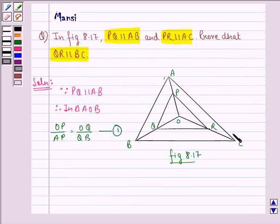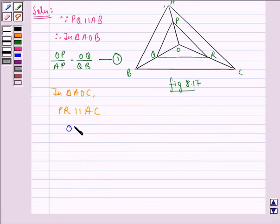Again in triangle AOC, it is given to us that PR is parallel to AC. Now PR is parallel to AC, then again by basic proportionality theorem we have OR by RC is equal to OP by AP. We name this 2.